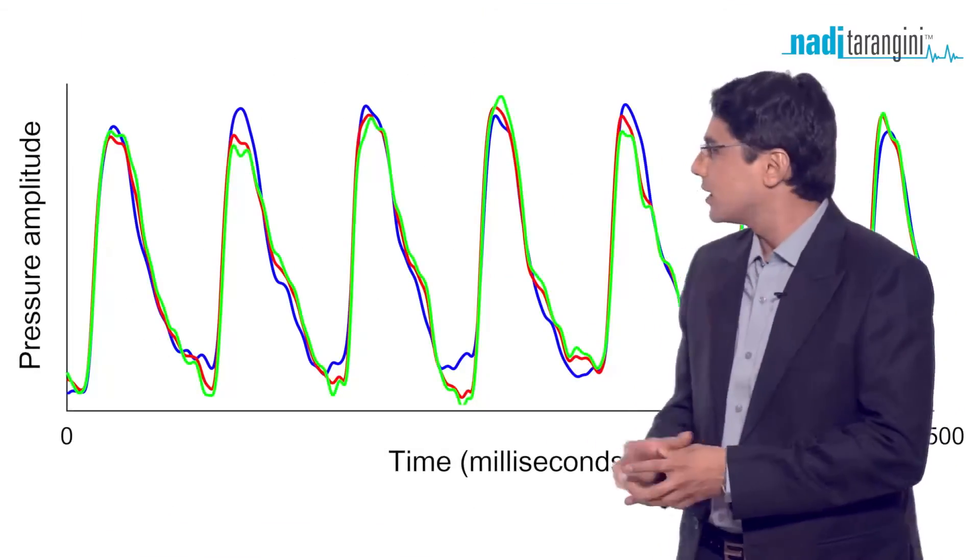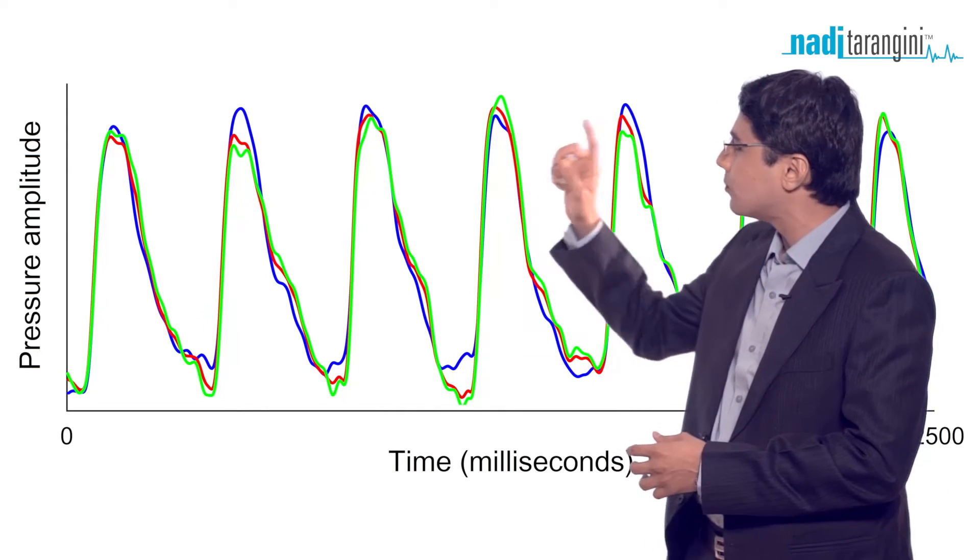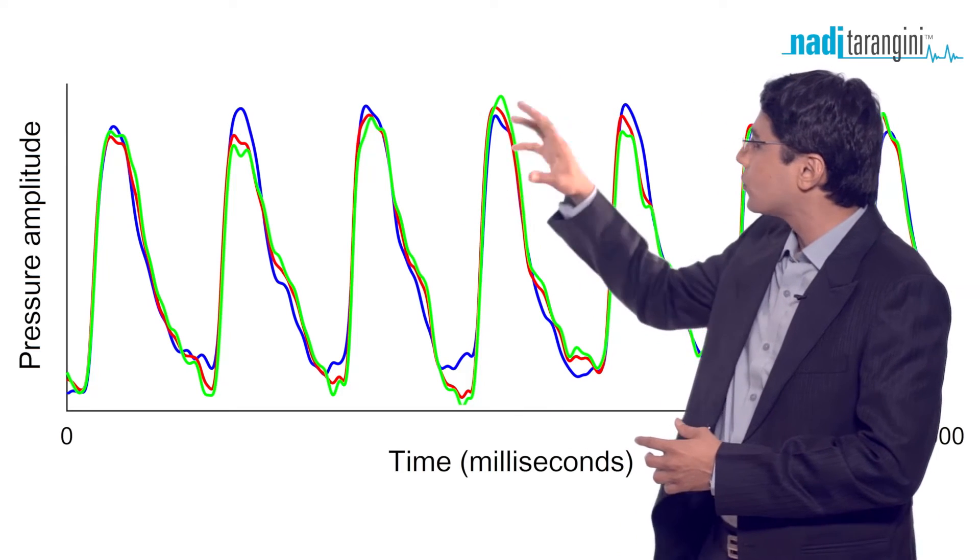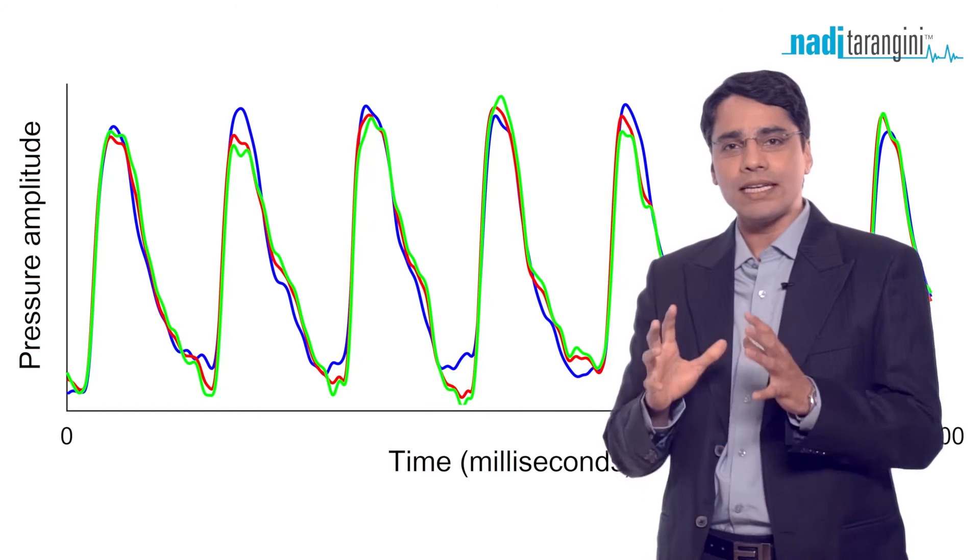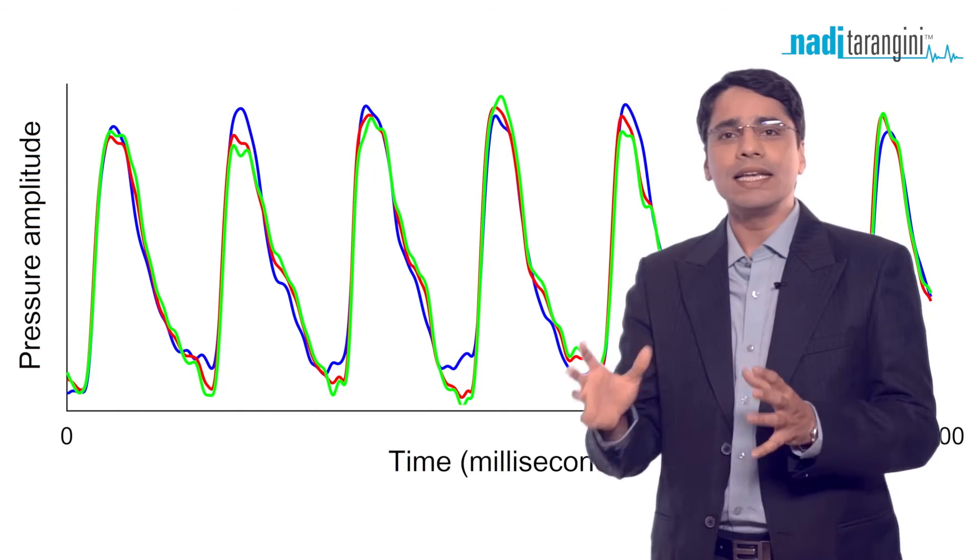In the first example, you can see all three colors representing Vata, Pitta, and Kapha—blue, red, and green. All three waveforms are almost the same, so we can say that all three Doshas at that particular point of capture have equal strength.